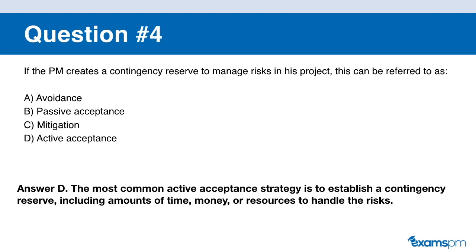If you said D, you are correct. The key here is that the PM is not doing anything to actively manage the risk — he's just putting aside a contingency reserve to deal with it if it happens. The most common active acceptance strategy is to establish a contingency reserve including time, money, and resources to handle the risk when it occurs. This is called active acceptance.